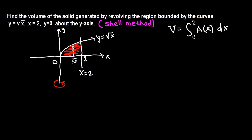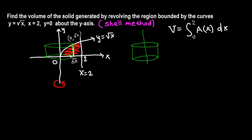When we revolve this small-width sample rectangle about the y-axis, we get a cylindrical shell — hollow inside. The generic point on the curve is (x, y) where y equals root x. Let me draw this shell of the cylinder, with the y-axis inside and the x-axis going outward, with height root x.